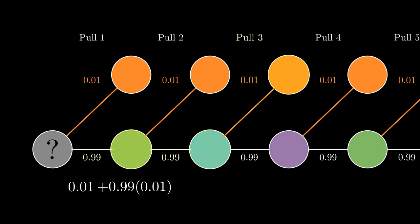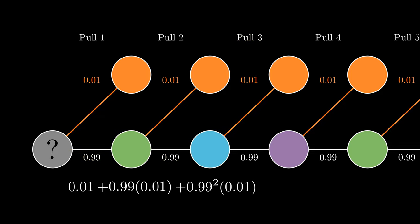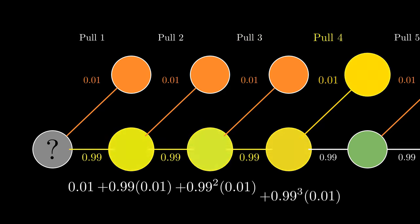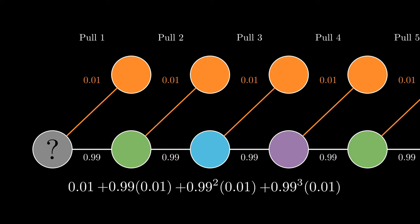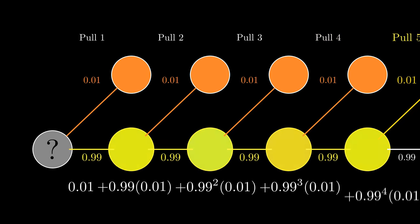Similarly, the third success would be 99% times 99% times 1%. Continuing in this way, we add up all of our probabilities to get our result.